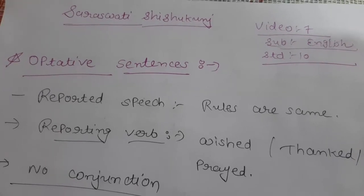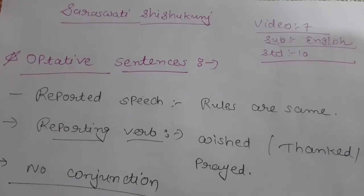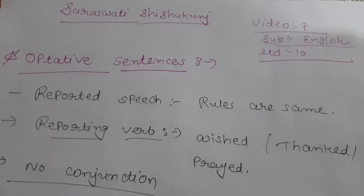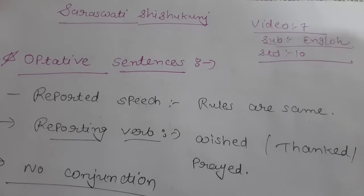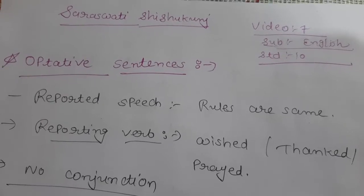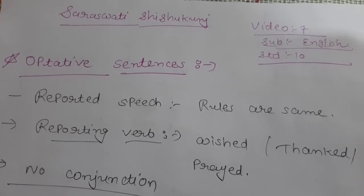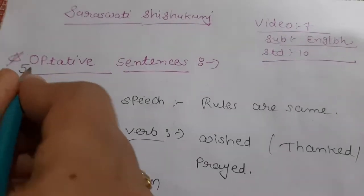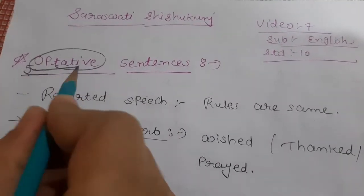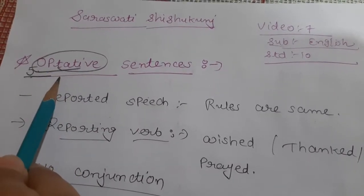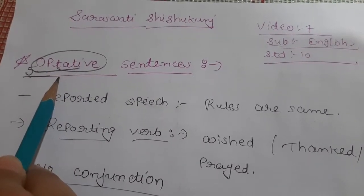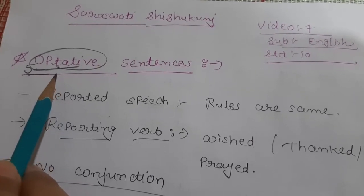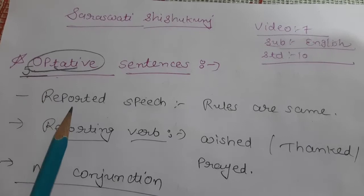Good morning everybody. Today our topic is once again indirect speech. Up to now I have talked about four types of sentences: simple, interrogative, exclamatory, and imperative. This is the fifth one — optative sentences. Today I will talk about optative sentences and I am going to conclude towards the paragraph — how to turn a paragraph into indirect speech.